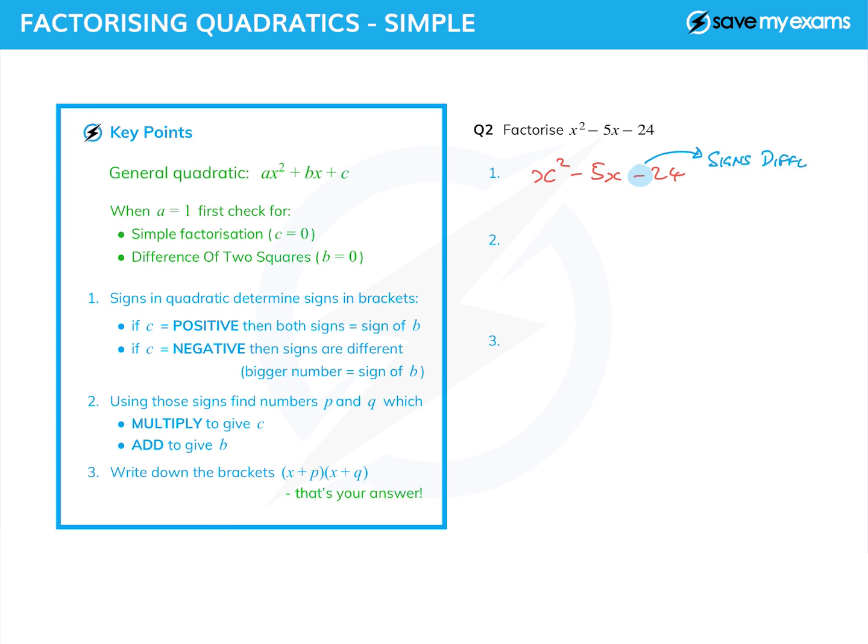We're going to have a plus and a minus. The other sign tells us that the bigger number of our two numbers will be negative. So we know we're going to get (x + something) and (x - something), and the bigger of the two numbers will be the minus one.